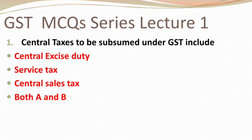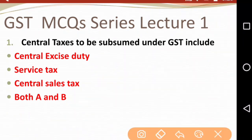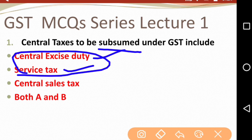Question: Central taxes to be subsumed under GST include — which taxes are subsumed? The options are: (A) Central Excise Duty, (B) Service Tax, (C) Central Sales Tax, (D) Both A and B. The right answer is Both A and B — Central Excise Duty and Service Tax.